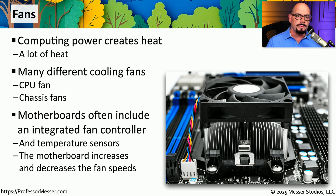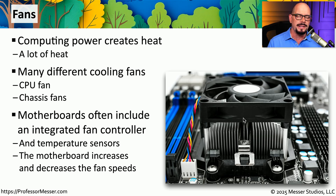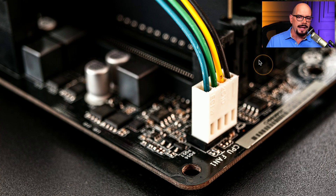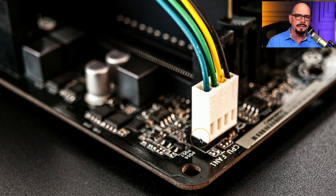This allows your motherboard to constantly monitor temperatures, and if it starts getting warm, it can spin those fans up a little bit faster to help cool off the entire system. You'll notice on most modern motherboards that your fans connect directly to the motherboard itself so that it can provide that cooling function. You'll notice this one is plugged in — it's even marked CPU Fan 1.